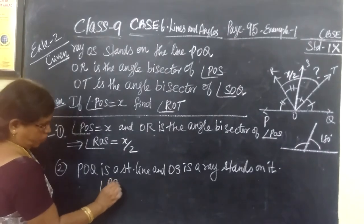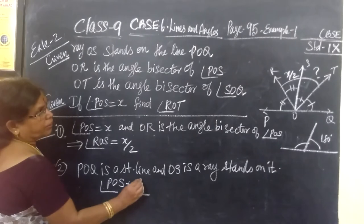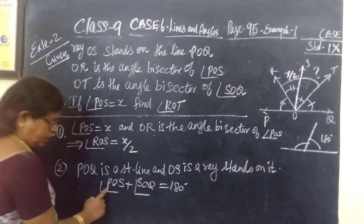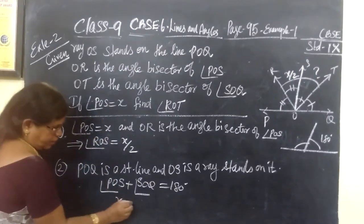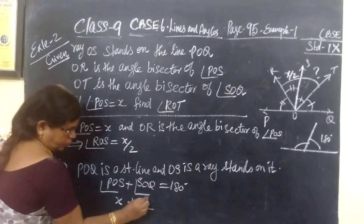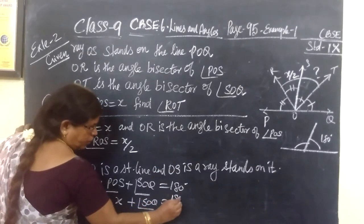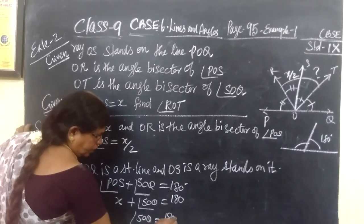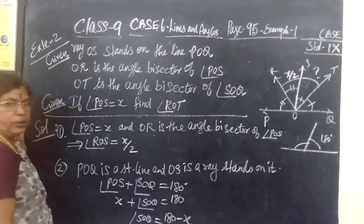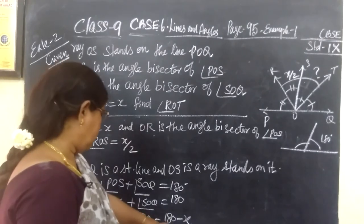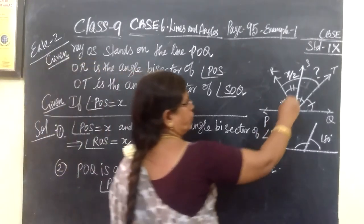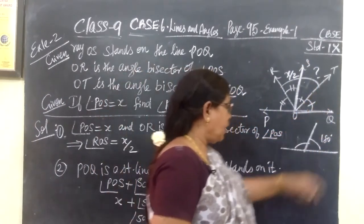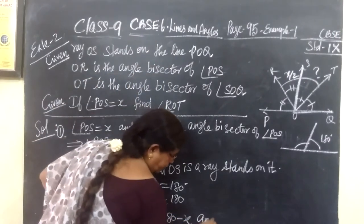Angle POS plus angle SOQ equal to 180 degrees. What is angle POS? It is given as X. Plus SOQ, you don't know, equal to 180. Therefore angle SOQ equal to 180 minus X.